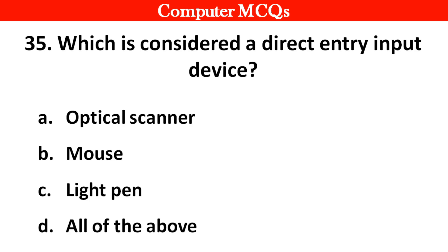Which is considered a direct entry input device? Option A optical scanners, B mouse, C light pen, D all of the above. Right answer is option D, all of the above.